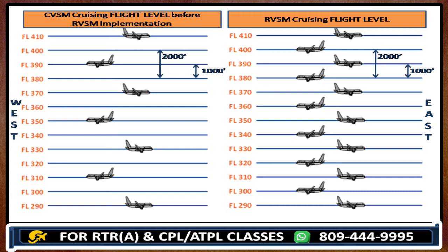If you count the flight levels between FL290 and FL410 under CVSM: 290, 310, 330, 350, 370, 390, and 410 — you have just 5 flight levels that can be assigned in between. But after applying RVSM, 6 more flight levels have been added, so you have a total of 13 levels that can be assigned.